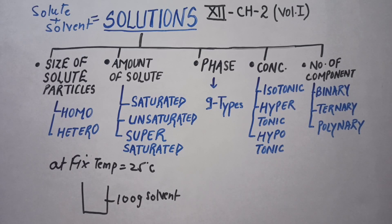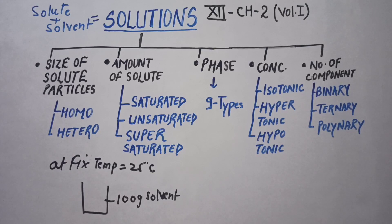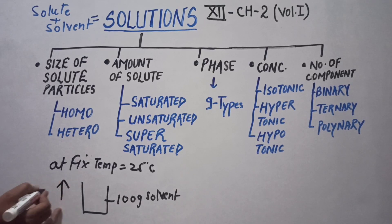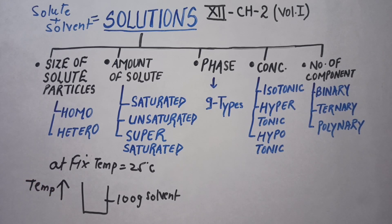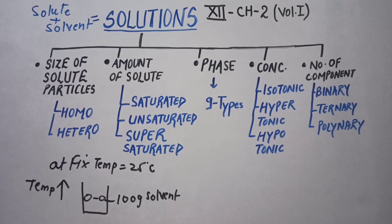Unsaturated solution means that if you have a solvent and you keep dissolving solute in it, until it reaches saturation, it is called an unsaturated solution. In a supersaturated solution, by increasing temperature, the solvent particles increase their distance and you can dissolve more solute — that solution is known as supersaturated solution.